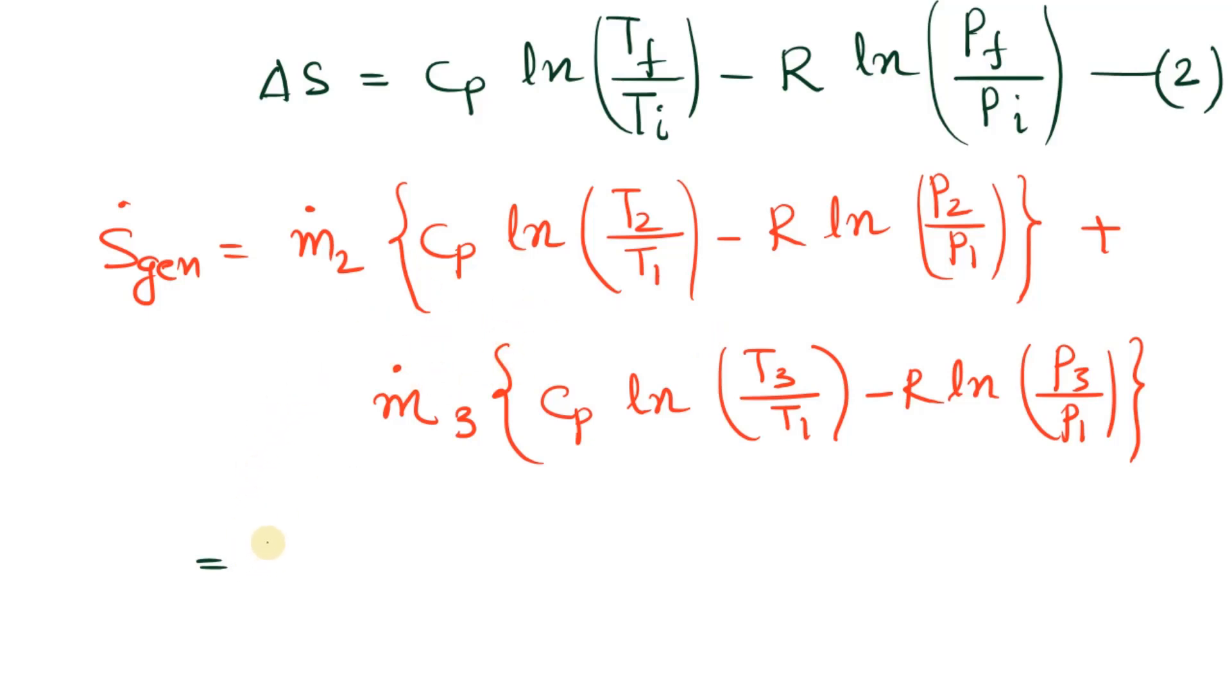m2_dot is 3 kg/s, multiplied by Cp which is 1005 J/(kg·K), so 1.005 in kJ. We write 1.005 ln, T2 is 340 and T1 is 300, minus R which is 0.287, ln P2 which is 100 and P1 is 500.